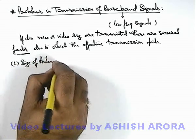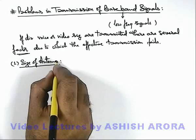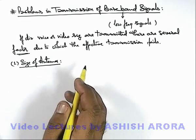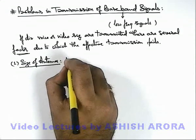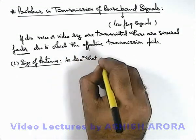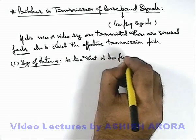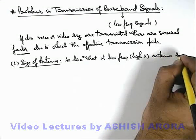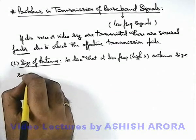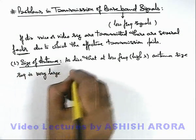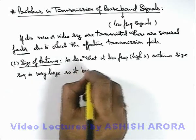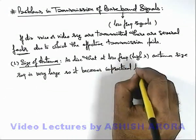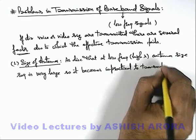As we have discussed, for effective transmission of signals through space, the antenna size must be at least equal to one-fourth times the wavelength. At low frequency, which is the case of high wavelength, the antenna size required is very large, so it becomes impractical to transmit such low frequency signals.